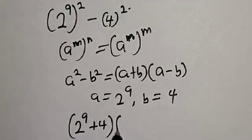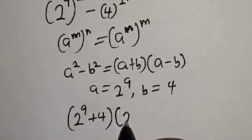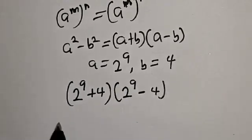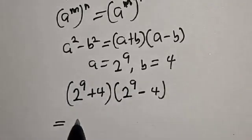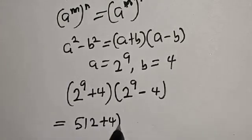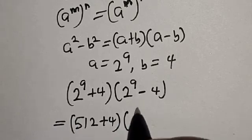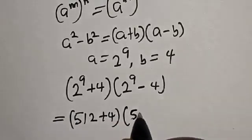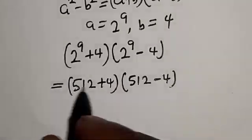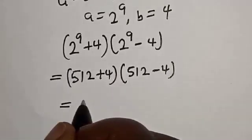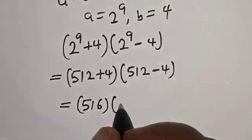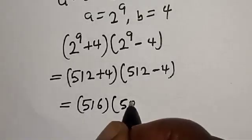We have (2^9 + 4) multiplied by (2^9 - 4). 2 raised to power 9 is 512. So 512 minus 4 is 508, and 512 plus 4 is 516. Then we have 516 multiplied by 508.